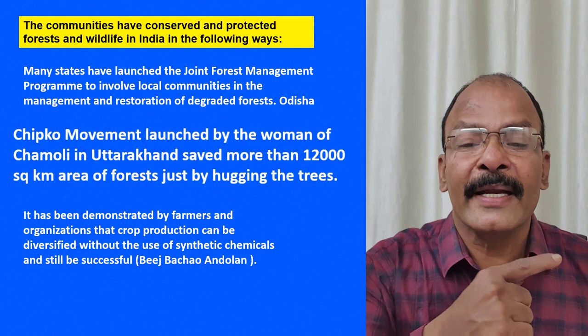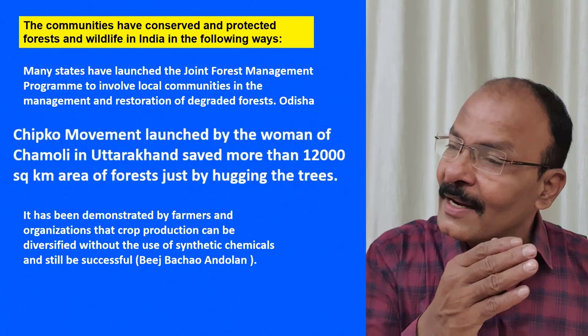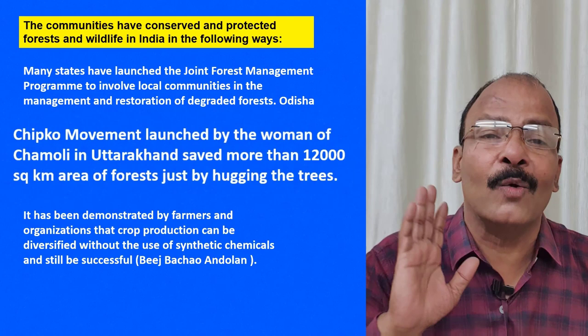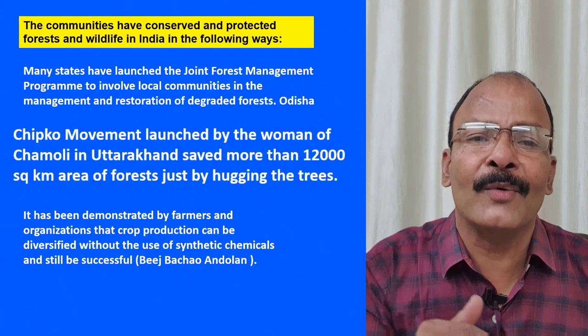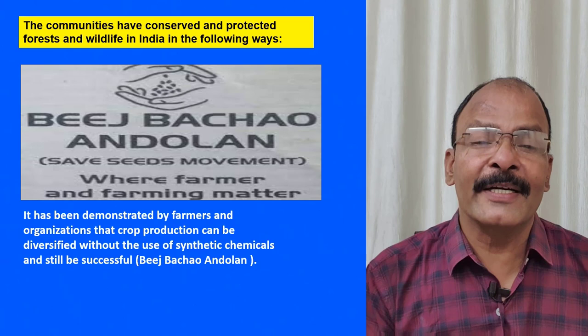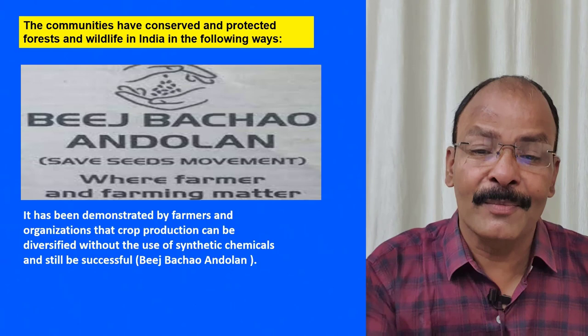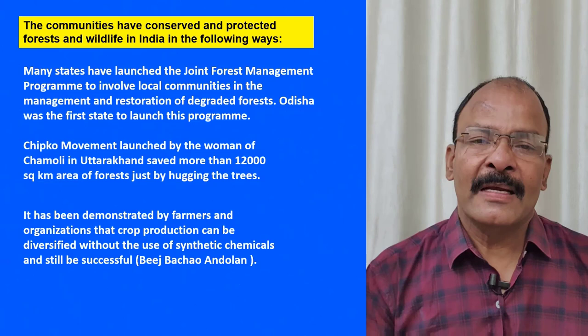When people came to cut the trees, the men in the villages had left to avail a government scheme. The women ran out to the trees, hugged them, and surrounded them completely, preventing the cutting. This movement came to be known as the Chipko Movement. Additionally, the Beej Bachav Andolan is a movement where farmers demonstrated that crops can be produced using organic methods and ordinary seeds, without hybrid seeds.